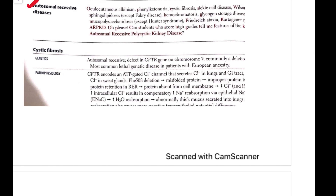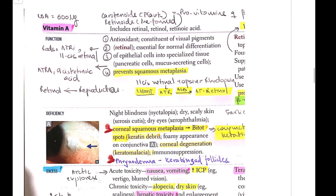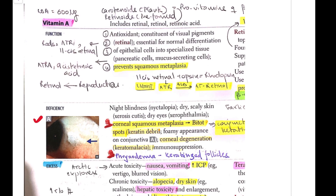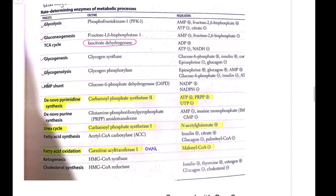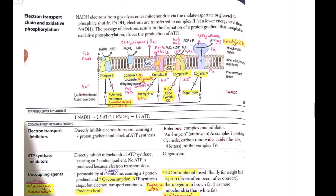Then autosomal recessive disorders like cystic fibrosis. Next, cri-du-chat has partial aneuploidy — this was also asked this year. Then this image was given in a recent exam asking about deficiency of vitamin A. Another question asked about G6PD deficiency — the enzyme glucose-6-phosphate dehydrogenase, seen in the HMP shunt. It was not asked directly but in the form of a question covered in the later chapters of this book.